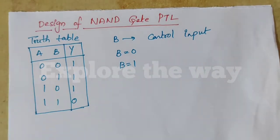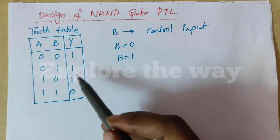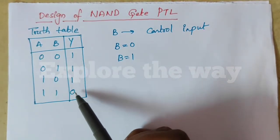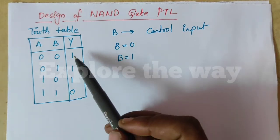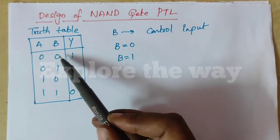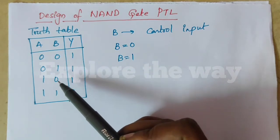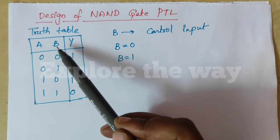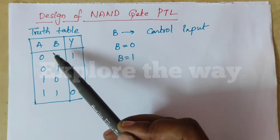Let us implement the NAND gate. This is the truth table for the NAND gate. NAND gate produces 0 when both inputs are 1, and its output is 1 when at least one of the inputs is 0. It has two inputs, A and B. We will take one input as the control input and the other as the data input.